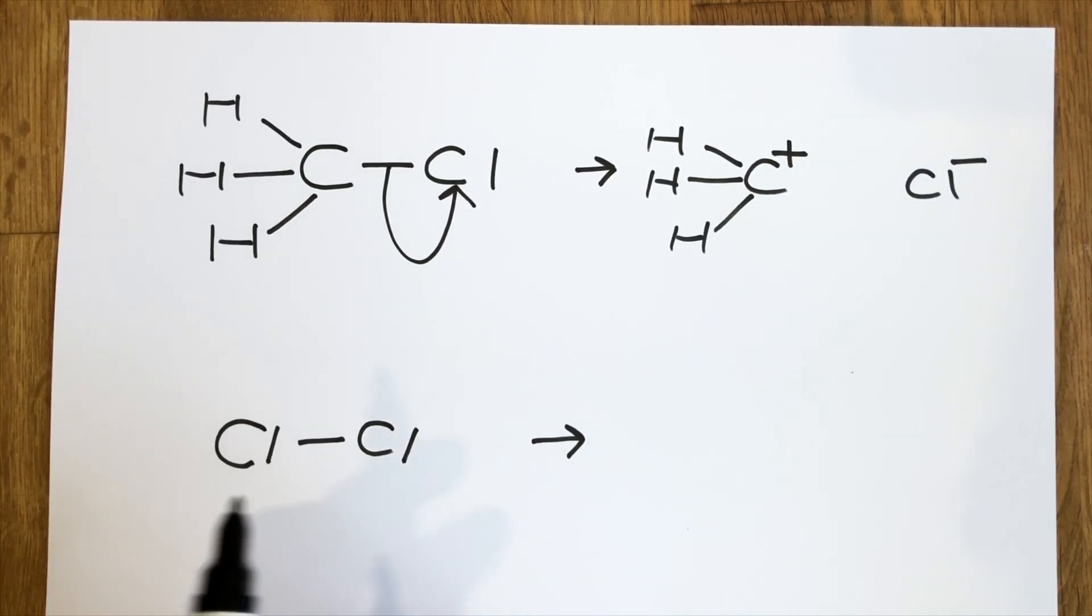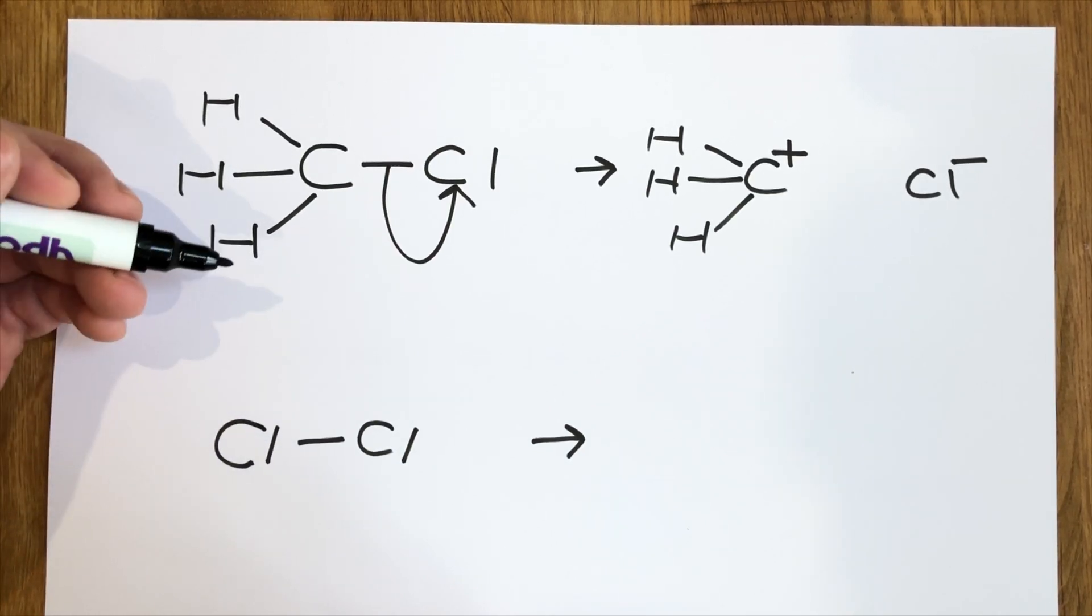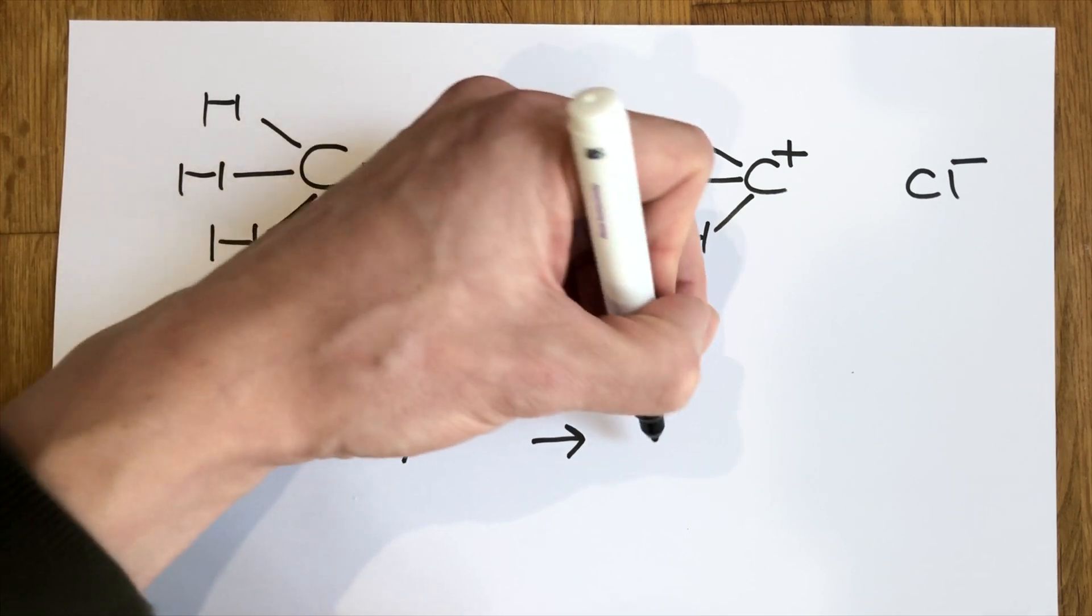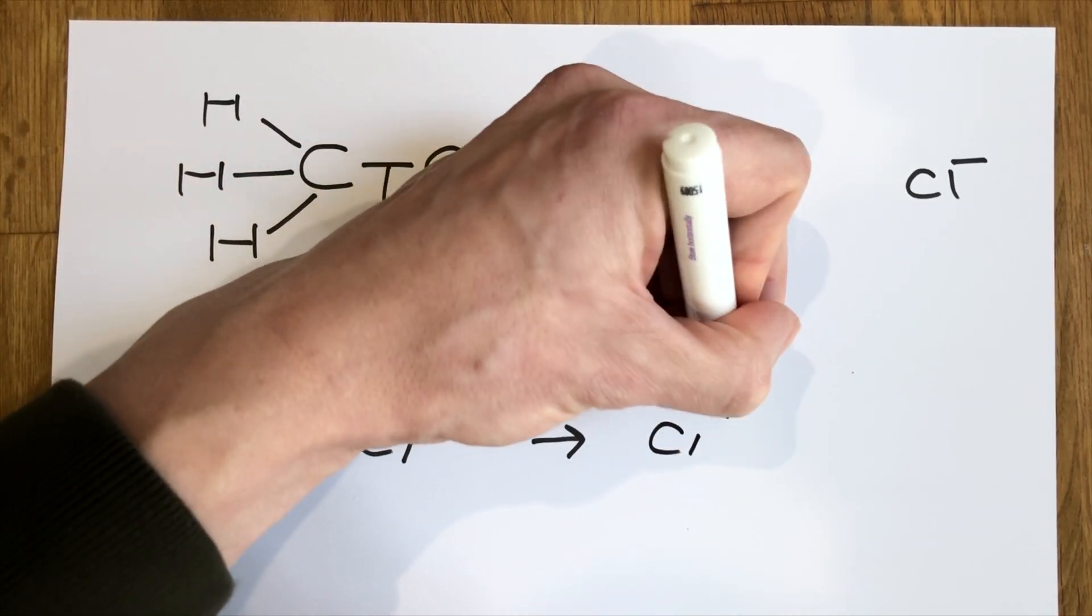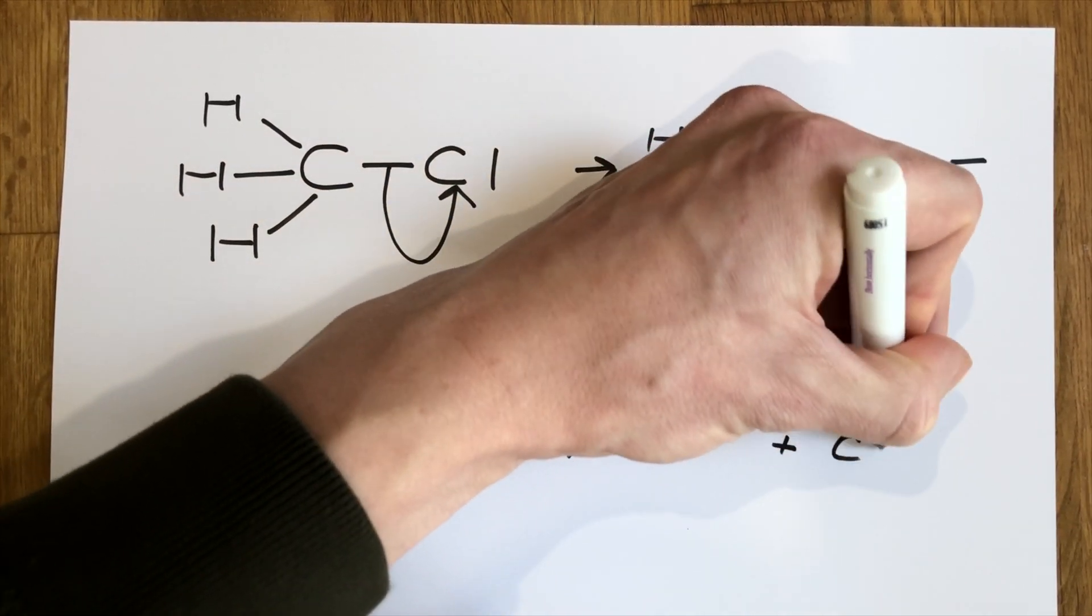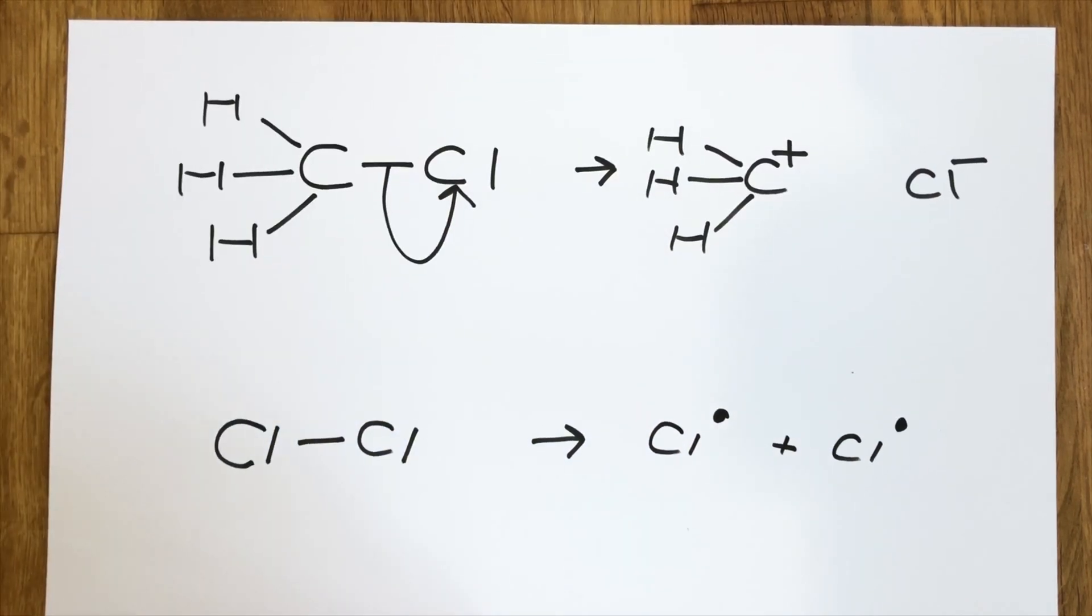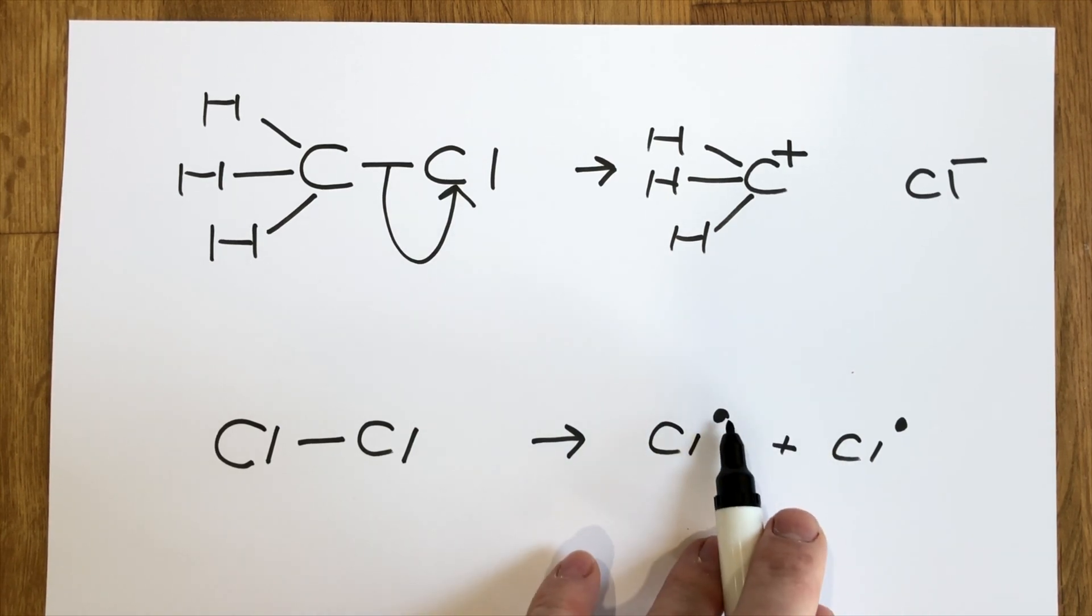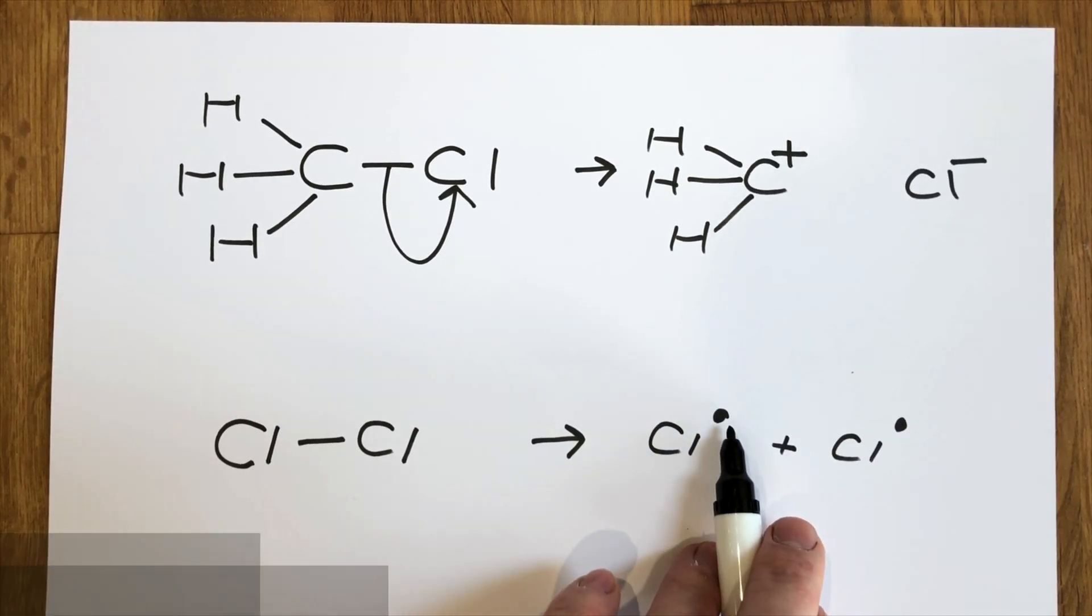Now the alternative type of bond fission that I want to talk about is called homolytic bond fission. We don't have curly arrows this time, and instead what we show are our two products, which seem to have this dot notation to them. The dot notation means that these two substances here are free radicals, and this dot means that this has a single unpaired electron.